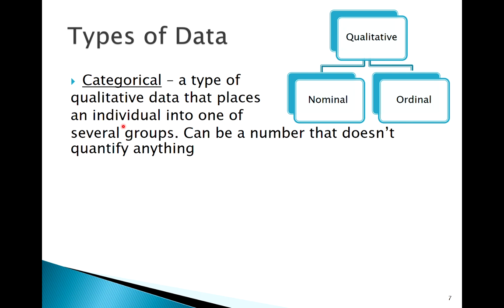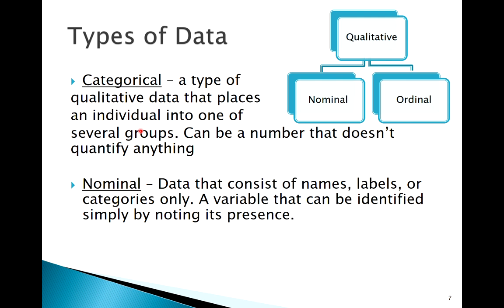Either way, categorical data is data that puts individuals into categories. I could further break down categorical data into nominal categorical data and ordinal categorical data. Ordinal categorical data is data where the categories of that variable has some sort of natural order to it. Nominal - it does not.